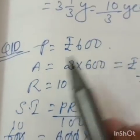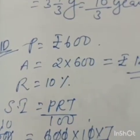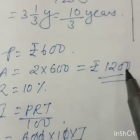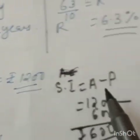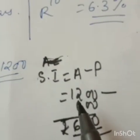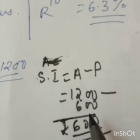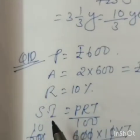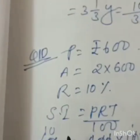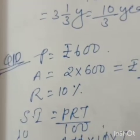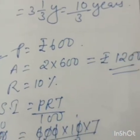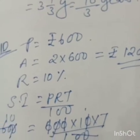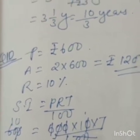Question number 10 solution: Principle 600, amount equals double — 2 into 600 equals 1200. Simple interest equals amount minus principle: 1200 minus 600 equals 600 is the simple interest. Put in the formula: simple interest equal to PRT by 100. You will get time equal to 10 years.